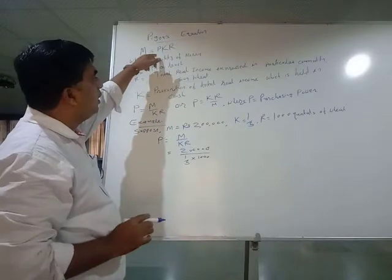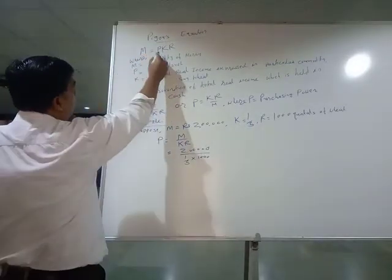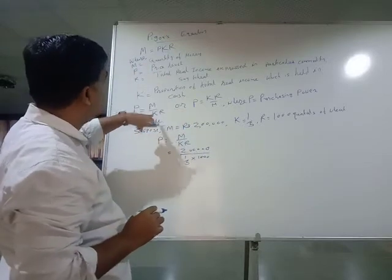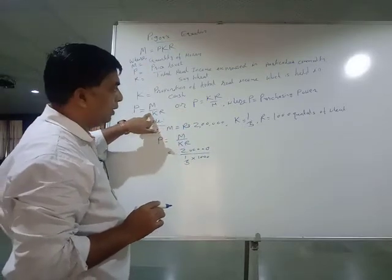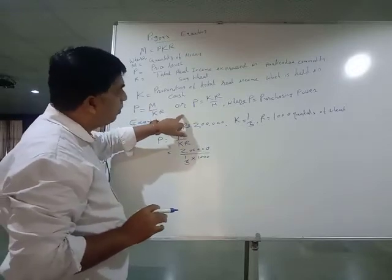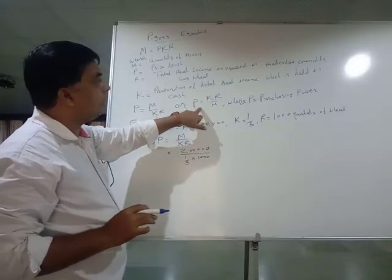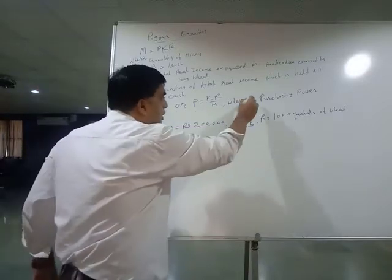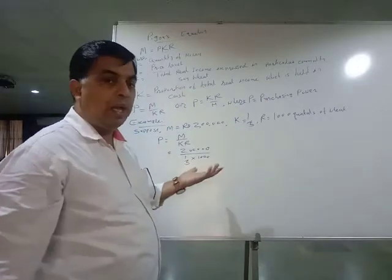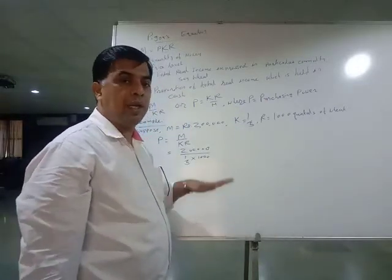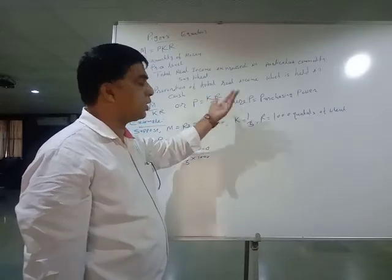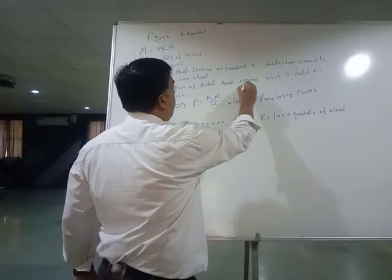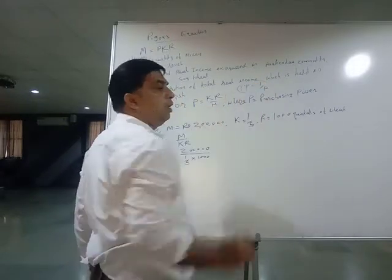This equation can also be written as: P is equal to M upon KR. If you want to find P, shift K and R to the denominator. In some books you will find P is equal to KR upon M, where P is considered as purchasing power rather than price level. The equation is reversed because purchasing power has an inverse relation with price level.